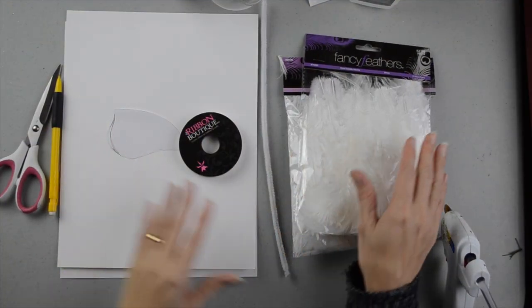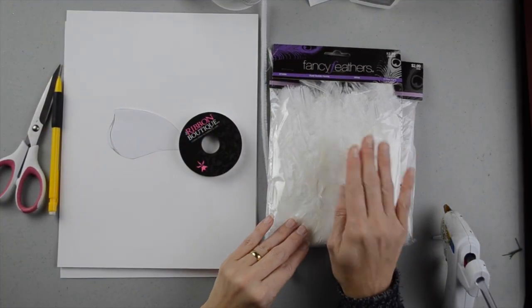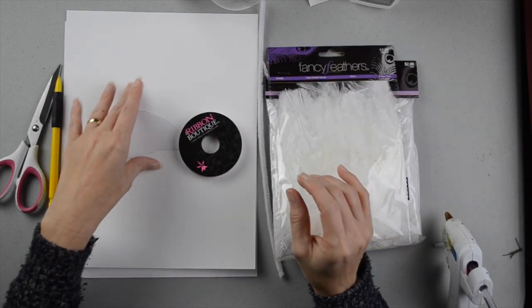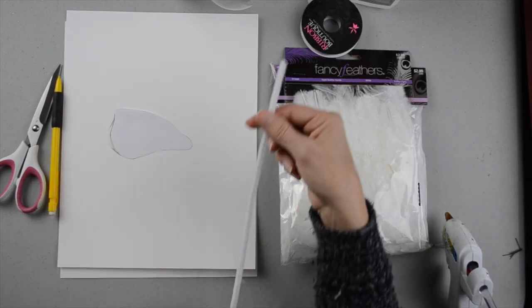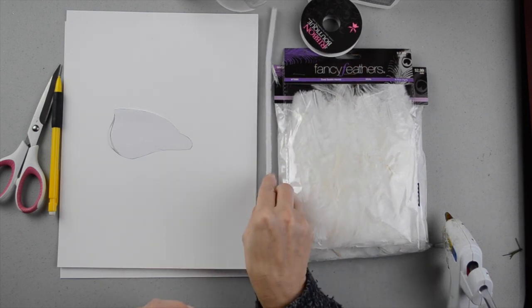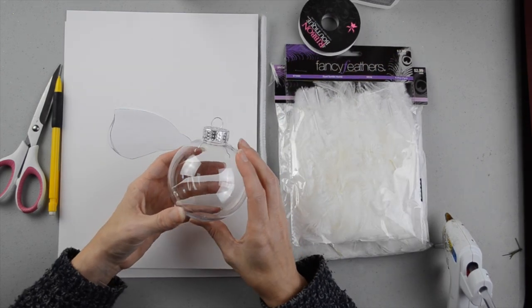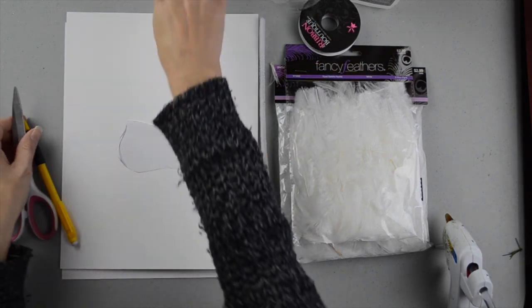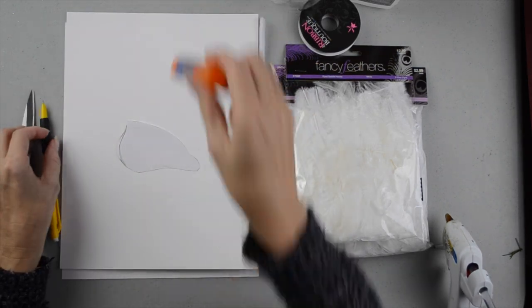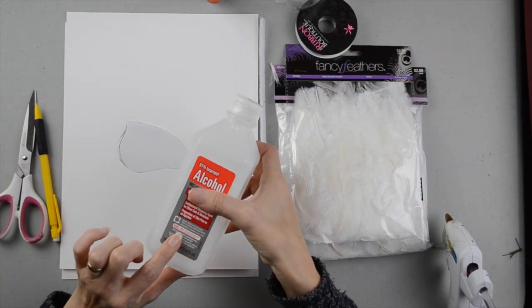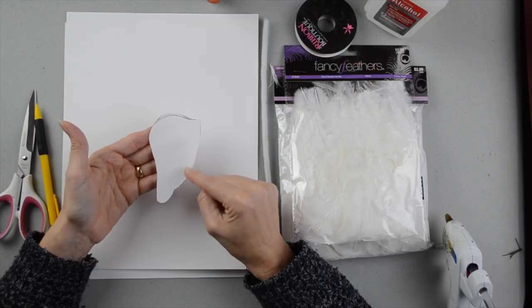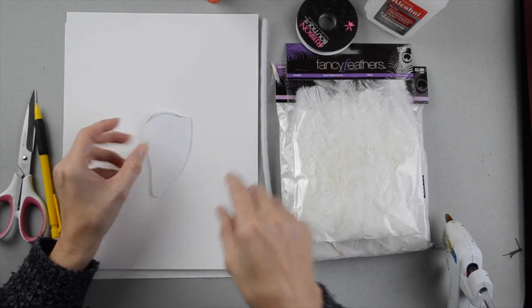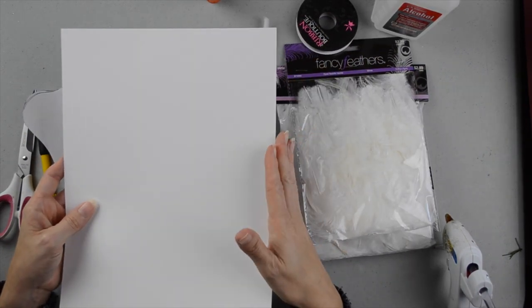To make this remembrance ornament, I have a few supplies. I have feathers and I have the hackle. Then I also have some white ribbon, I have a pipe cleaner in the color white. This is a plastic ornament, you can use glass if you like. This is 3.27 inch. I have my pencil, my scissors, a glue stick, some rubbing alcohol to clean my ornament. And I have an angel wing template that I drew and cut out, and also I have a 100 pound weight card stock.